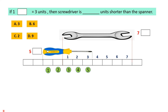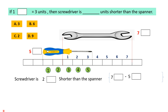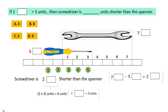Now we can find how many rectangular boxes shorter the screwdriver is than the spanner. The screwdriver is 5 rectangular boxes and the spanner is 7 rectangular boxes, so the screwdriver is 2 rectangular boxes shorter. Since 1 rectangular box equals 3 units, 2 rectangular boxes would be 2 into 3 units, which equals 6 units. Therefore, the screwdriver is 6 units shorter than the spanner. The correct option is B, that is 6.